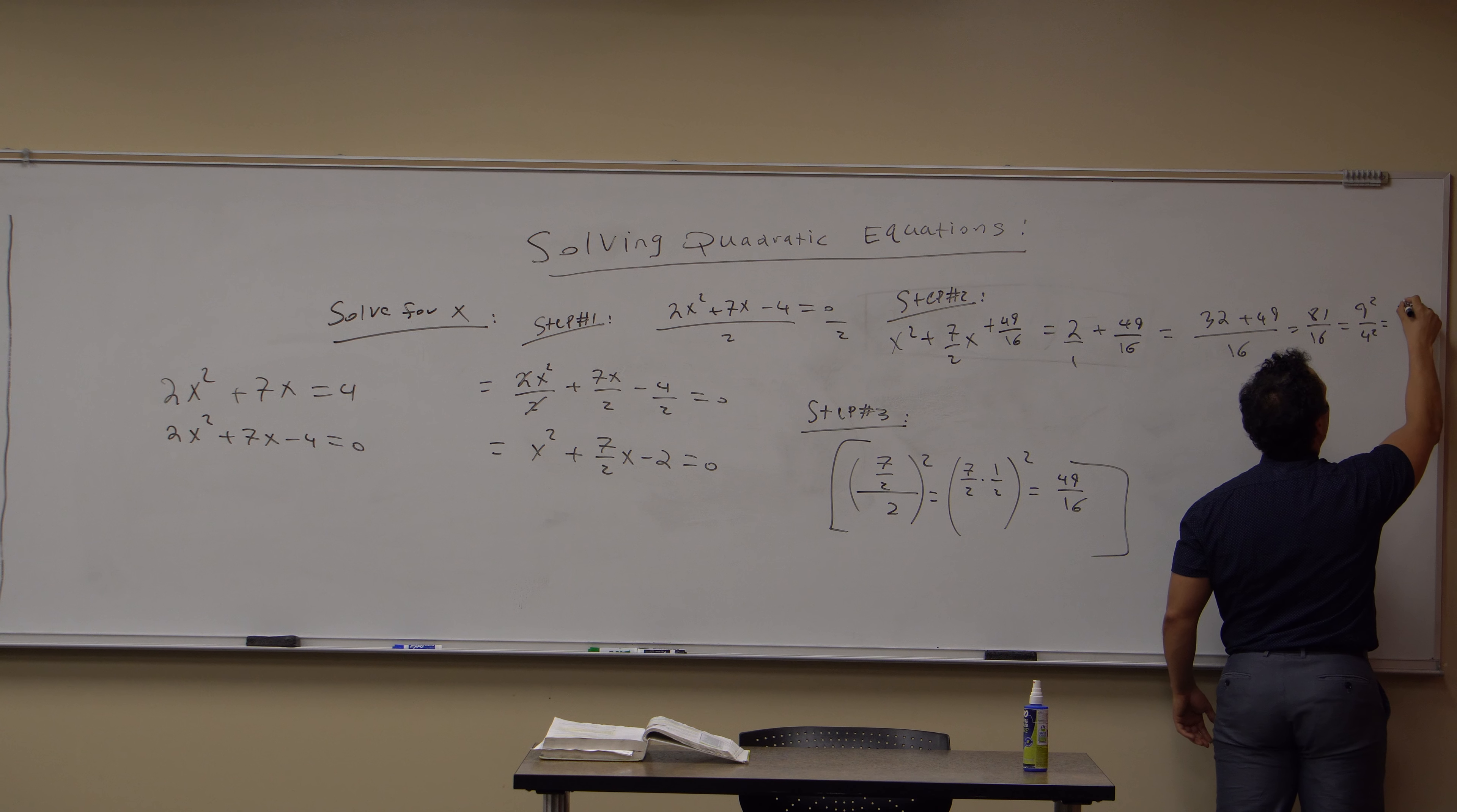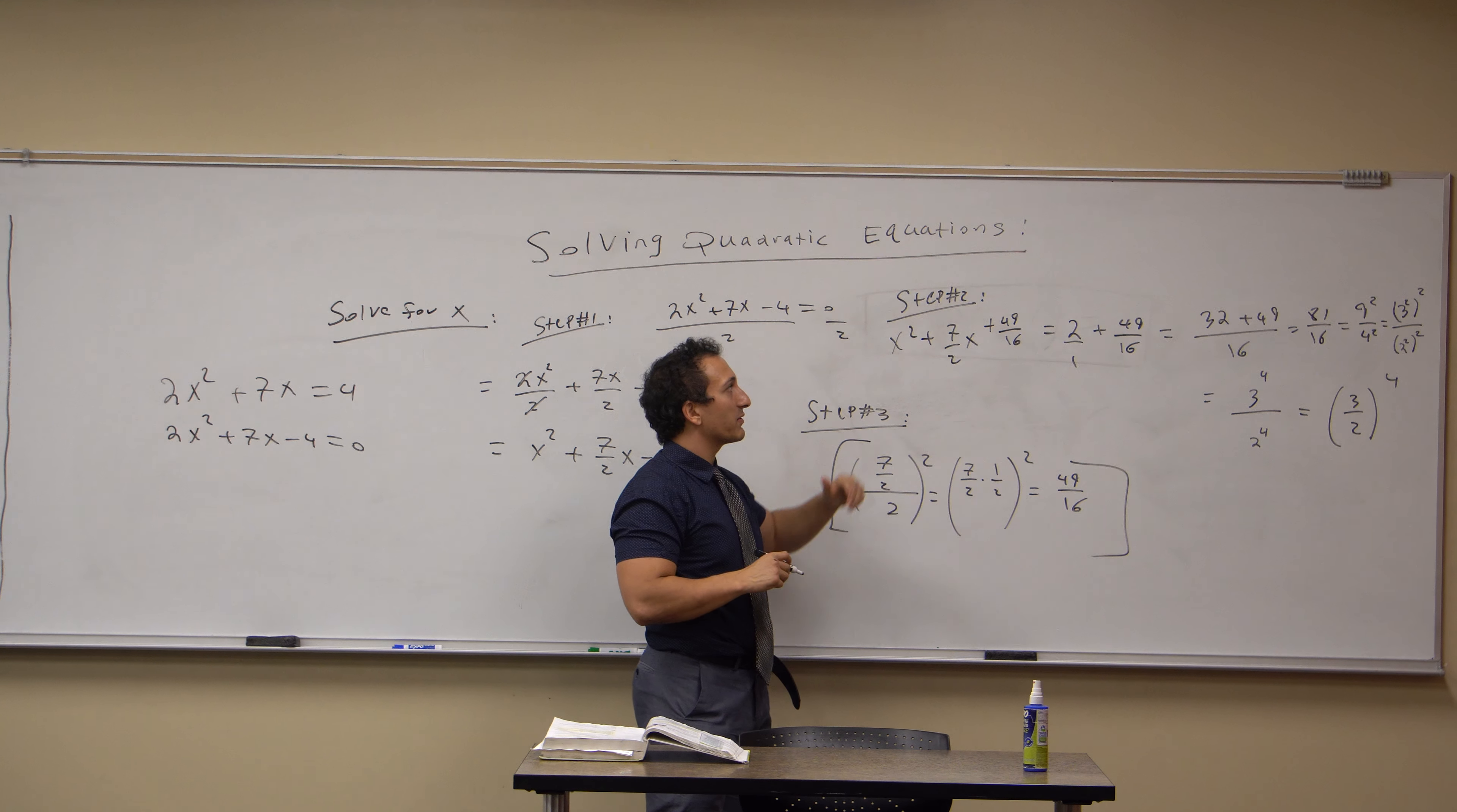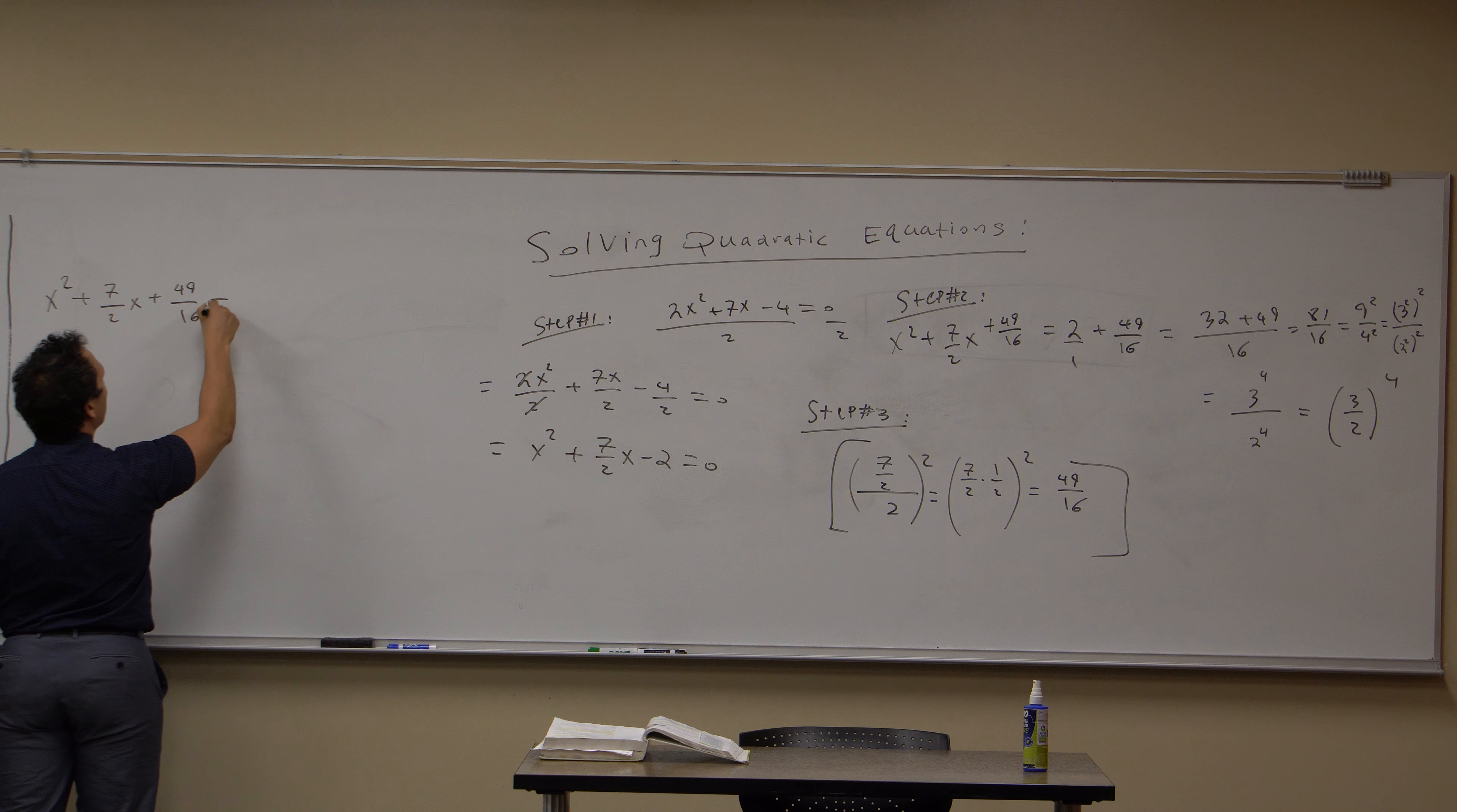This breaks down to 3², which is what 9 is, quantity squared, all over 2², which is 4 quantity squared. This breaks down to 3⁴/2⁴. So then we can bring out that 4th power, (3/2)⁴. That's what the right hand side will be. The left hand side is x² + 7/2x + 49/16. And notice that if I bring the party over here, that means we can factor. We know how to factor that.